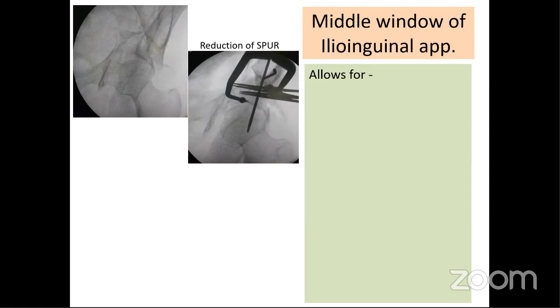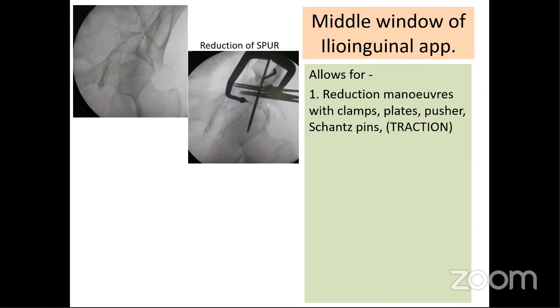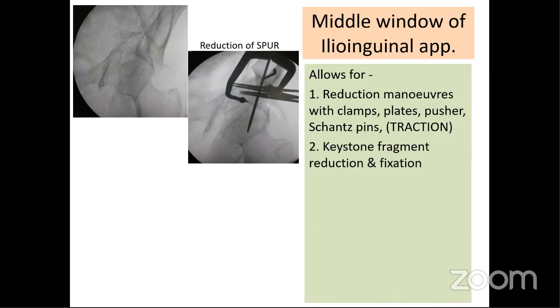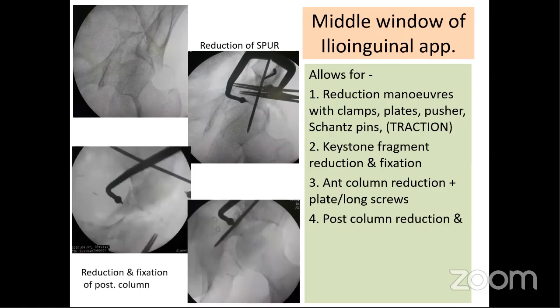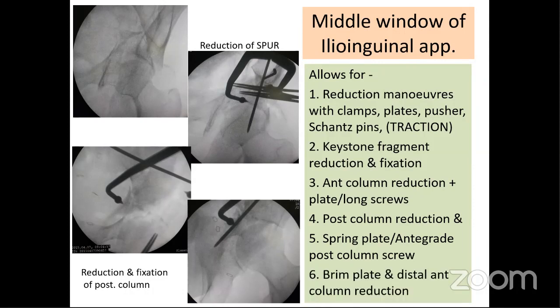The middle window of the ilioinguinal approach is the workhorse for ABC fractures. It allows use of various clamps, plates, pushers, and Steinmann pins; identification and placement of the keystone fragment; anterior column proximal and distal reduction and fixation; and posterior column reduction using a ball-tip clamp. Posterior column fixation can be achieved with a spring plate, anti-grade posterior column screw, brim plate, and distal anterior column reduction.